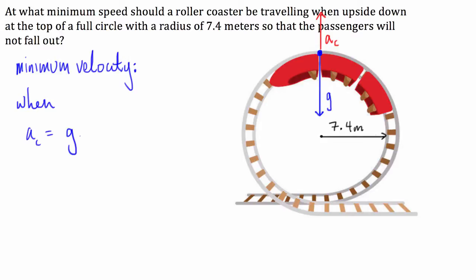Cool. So, if the acceleration of the circular motion or centripetal acceleration is greater than g, then it's going to be going faster than the minimum required speed. If it's less than g, then the passengers are going to fall out, and it's not going to be a safe ride. So, it's the minimum speed when acceleration equals g.